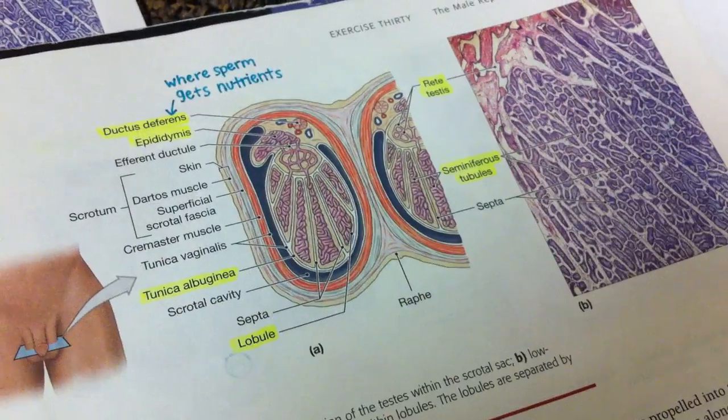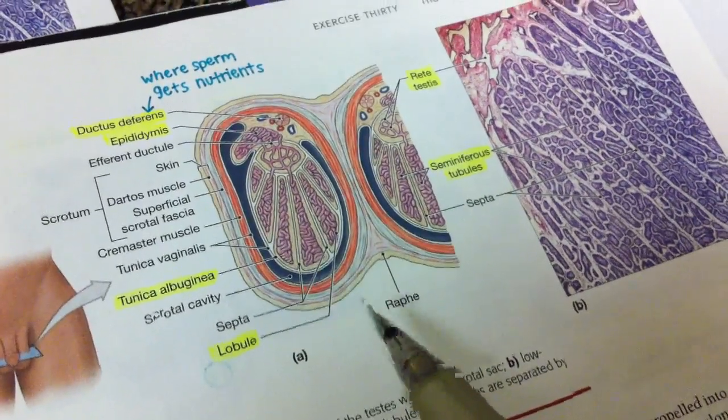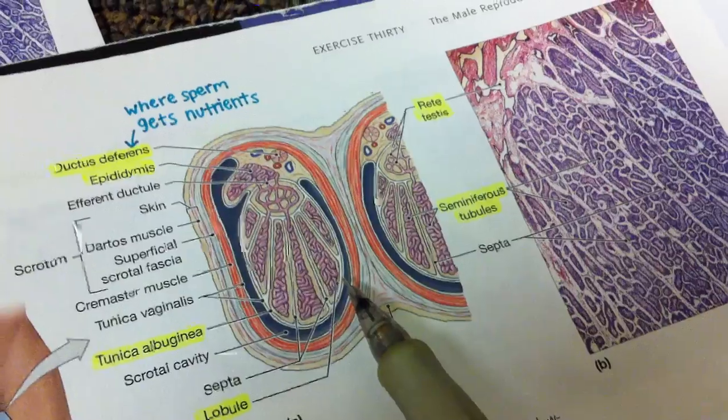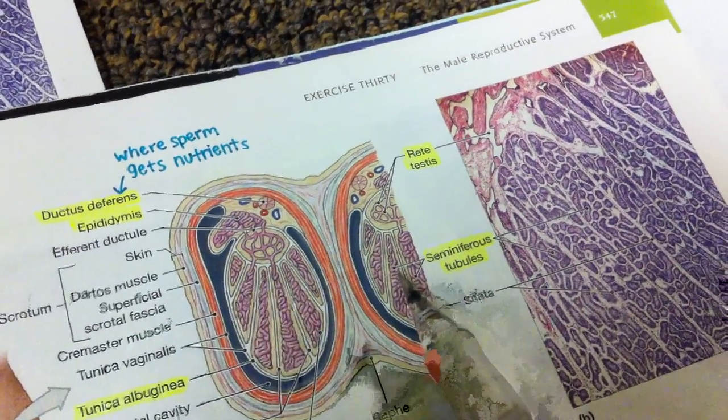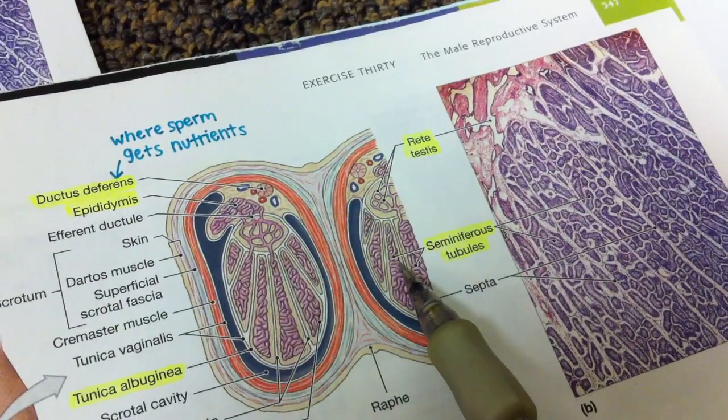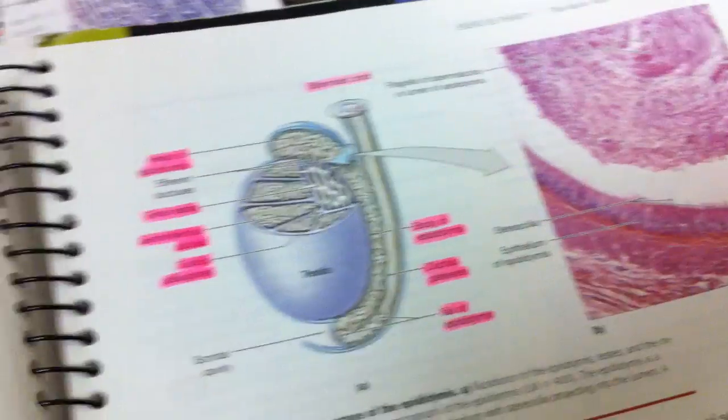This is a picture of the testes. The testes is divided into 250 lobules, and in those lobules there's three to four seminiferous tubules, and those tubules produce sperm.